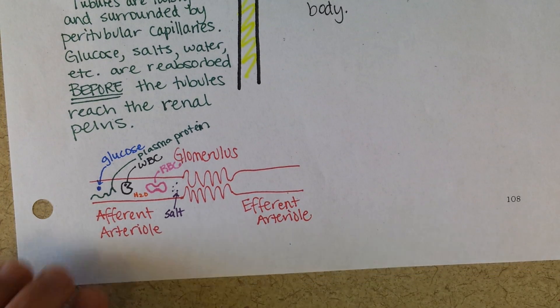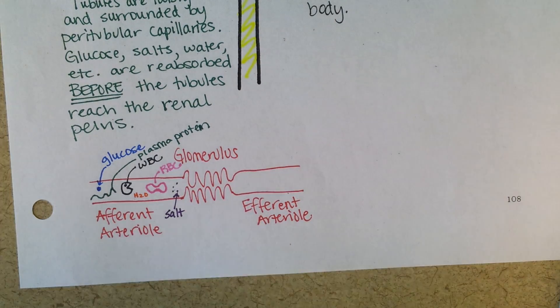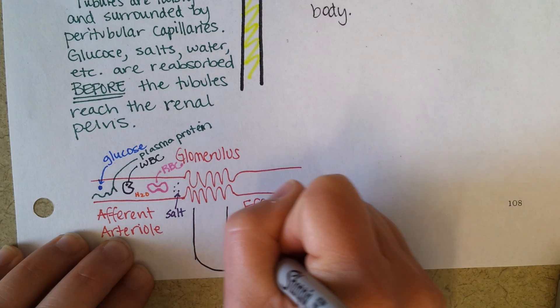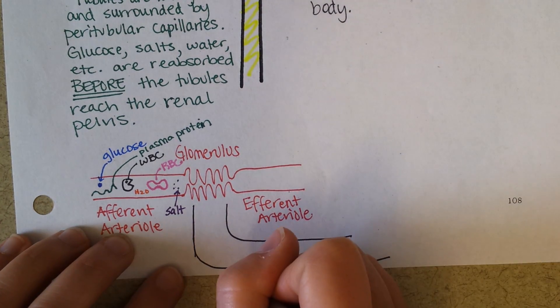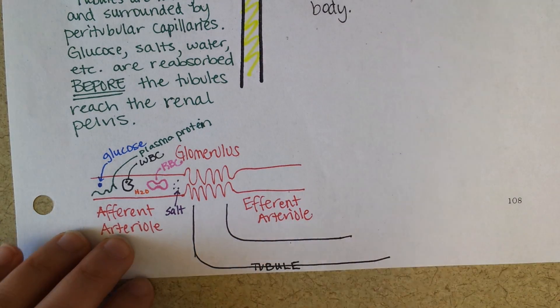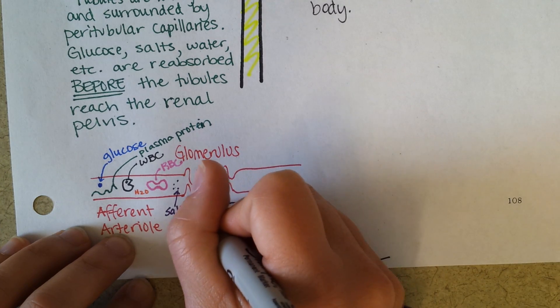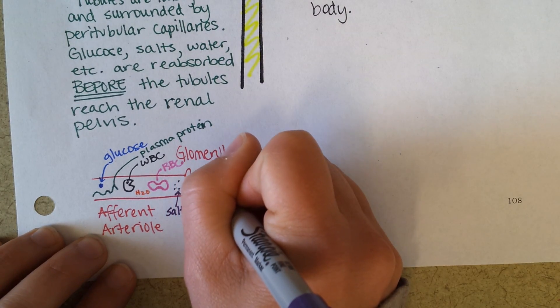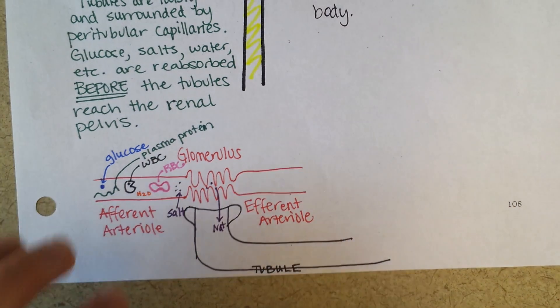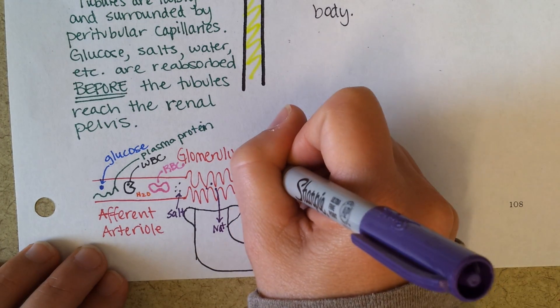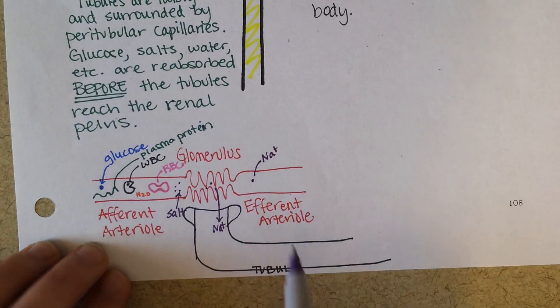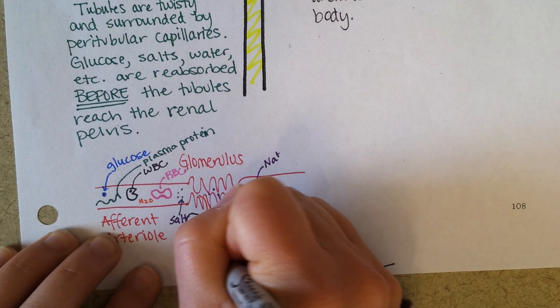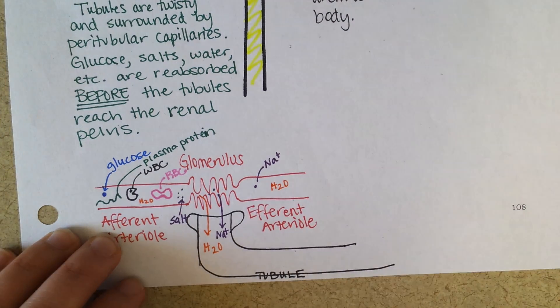When it comes to the glomerulus, then, the salt, let's draw a tubule. This is where the tubule starts, and loop it around, like this. It kind of opens up like that at the start. Okay, so some of the salt comes. You can just put Na+, and then some of the salt continues on. So you're going to have a little bit that's filtered, and a little bit that goes on. And with water, you're going to have some water that gets filtered, and then you're going to have some water that continues on in the efferent arterial.